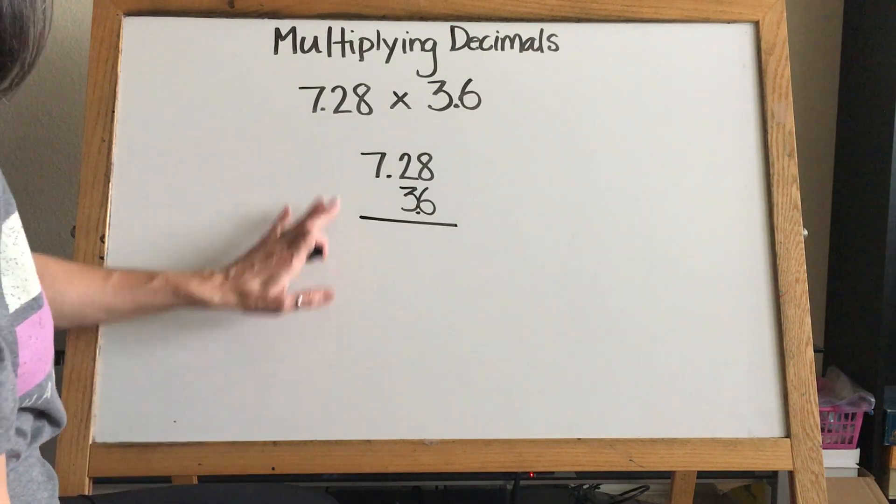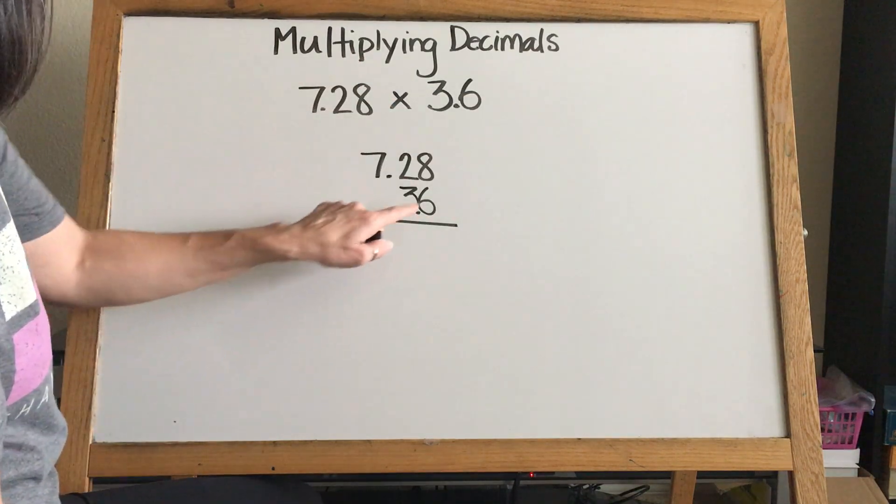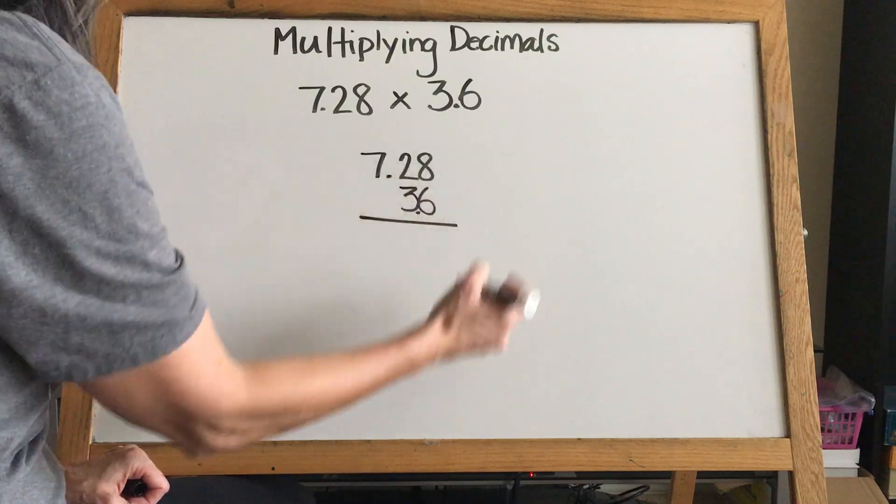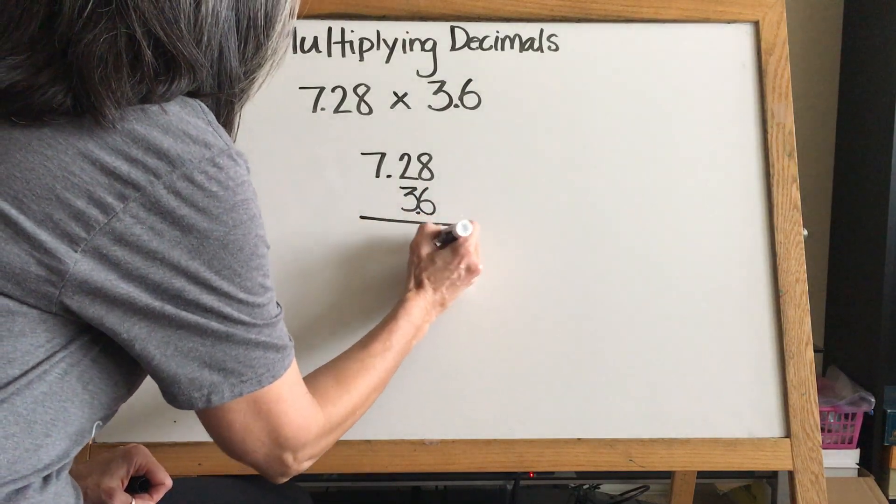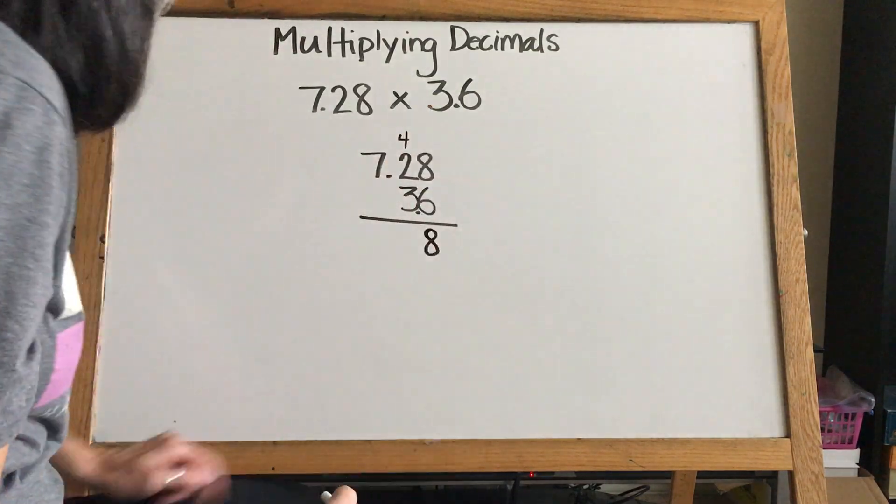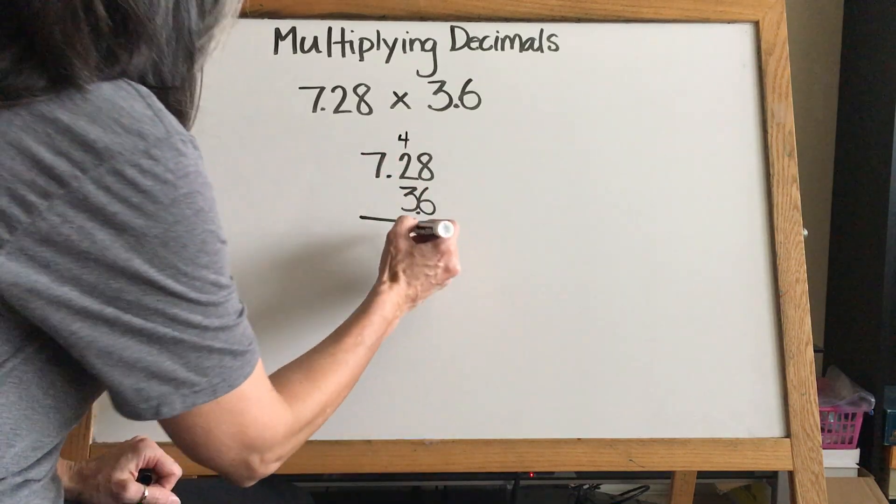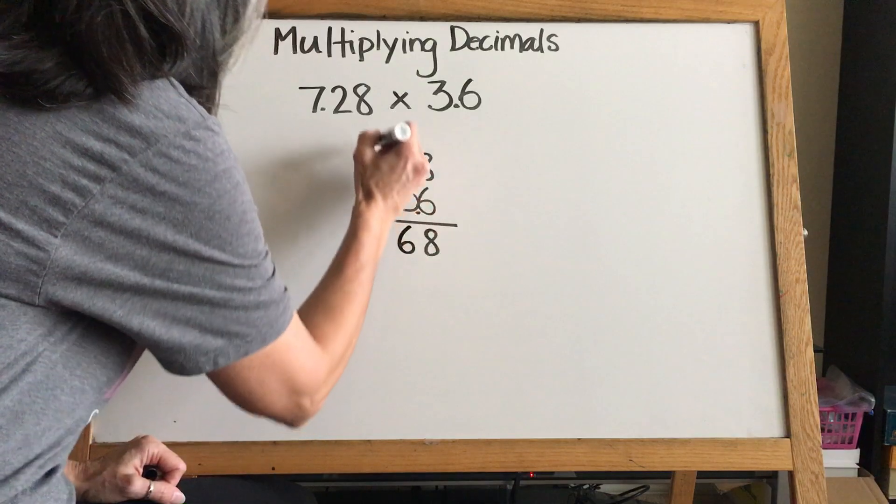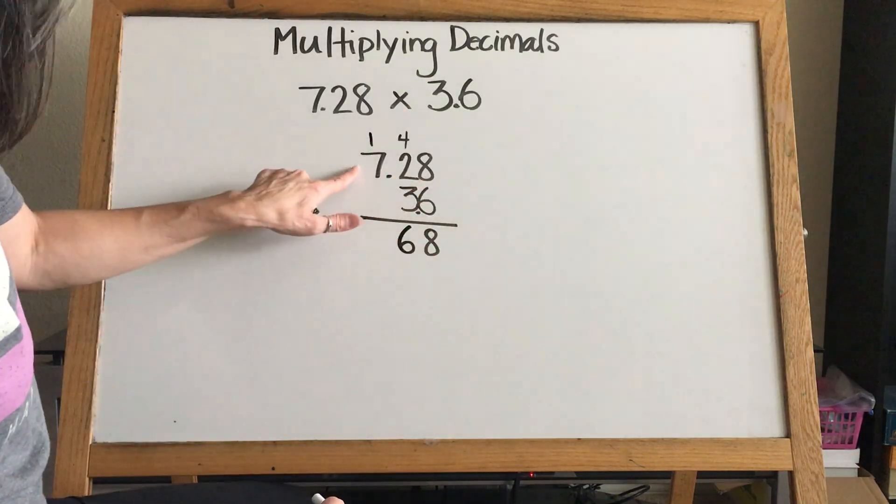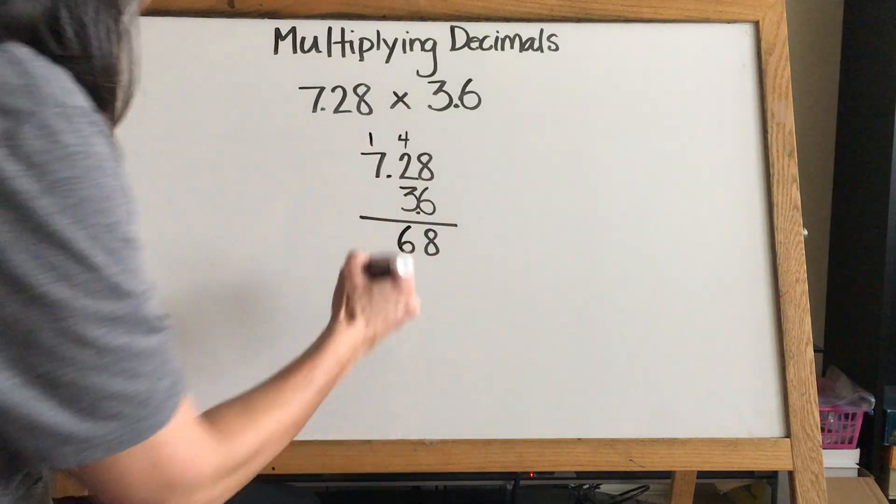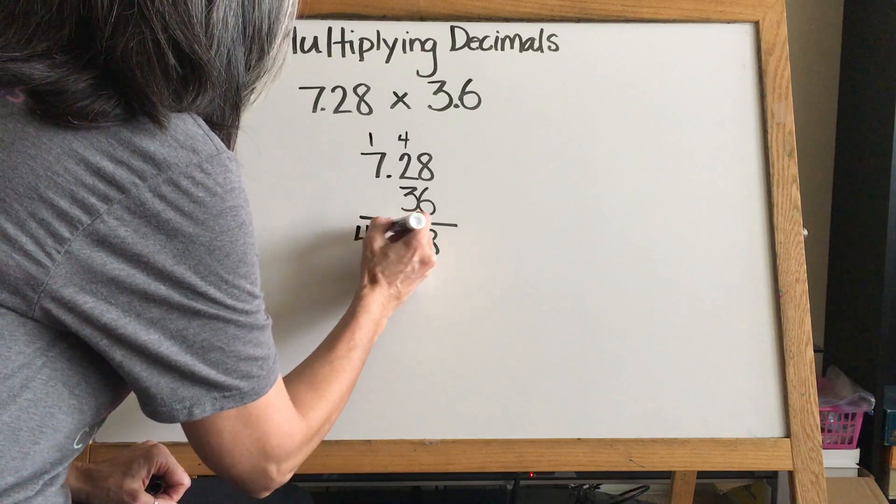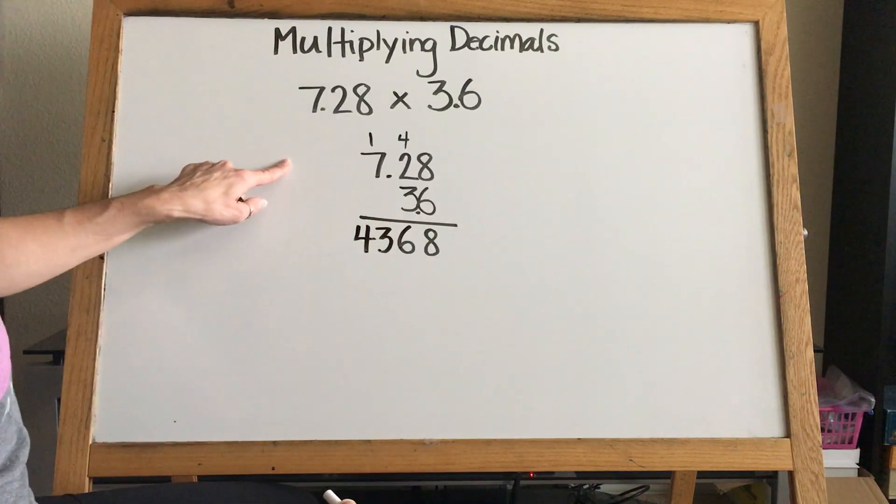Same multiplication - we're going to start over here in our first column. Six times eight is 48, so we write the eight and carry the four. Six times two is 12 plus four is 16, so we put our six and carry our one. Six times seven is 42 plus one is 43. We write our 43. We don't have any numbers left, so we know that we're finished with our six.